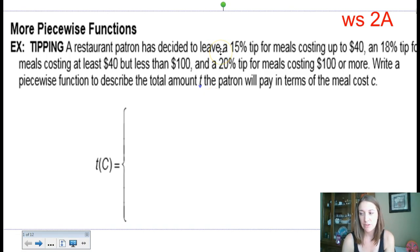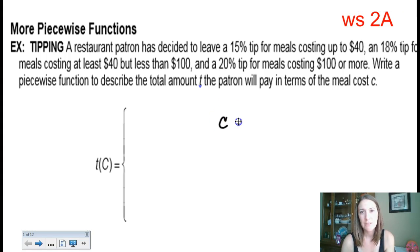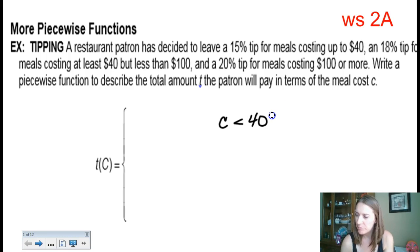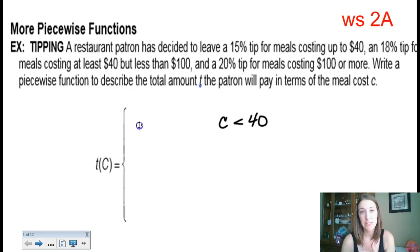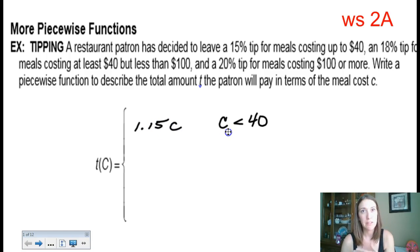The first piece: if the cost of your meal is up to $40 but doesn't include $40, the restriction is that cost has to be less than $40. The question asks how much the patron will pay — assuming total pay. If you add a tip, you take 100% of the bill plus the 15%, so that's 115% of the cost. So for the first piece, it would be 115% times whatever the cost of the bill was before tip.